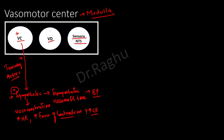Unlike the vasoconstrictor area, the vasodilator area is not tonically active. However, when stimulated, it does two things: it inhibits the vasoconstrictor area and stimulates the parasympathetic nervous system, i.e., the vagus nerve. Stimulation of the vagus results in a reduction in heart rate.